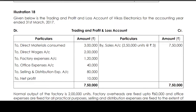The given below is the Trading and Profit and Loss Account of Vikas Electronics for the accounting year ended 31st March 2017. Sales: 2,50,000 units at ₹3 = ₹7,50,000. Direct material consumed ₹3 lakhs, direct wages ₹2 lakhs, factory expenses ₹1,20,000, office expenses ₹40,000, selling and distribution expenses ₹80,000, and net profit ₹10,000.